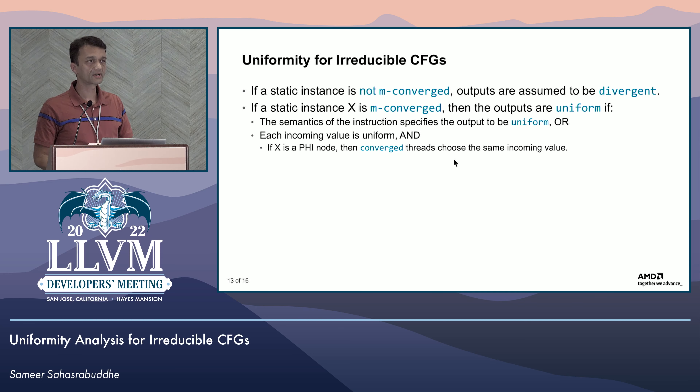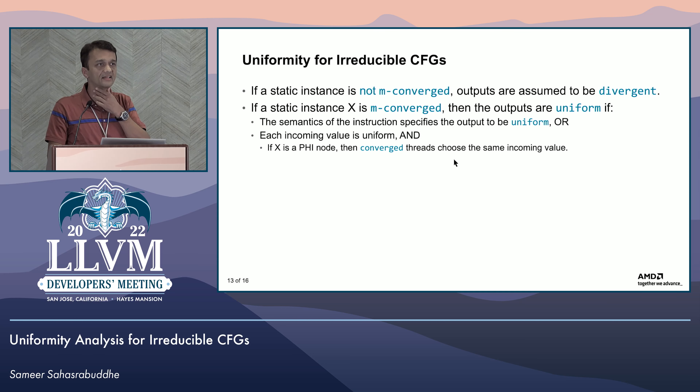Finally, with the notion of m-converged, we can define what uniformity means in a static analysis of the CFG. If a static instance is not m-converged, then the outputs of that operation are assumed to be divergent — which is pretty much what we have been doing so far, but now improved because we have a notion of what m-converged means. If a static instance is m-converged, then it depends on the semantics of the operation: if the operation specifies uniform outputs, then the outputs are uniform; otherwise the outputs are uniform if the inputs are uniform, except in the case of a phi node, where different threads may converge at the same phi node and if they choose the same incoming value, the produced output is also uniform. This second bullet is what the divergence analysis currently does, except when the control flow graph is irreducible, in which case it gives up and says everything is divergent.